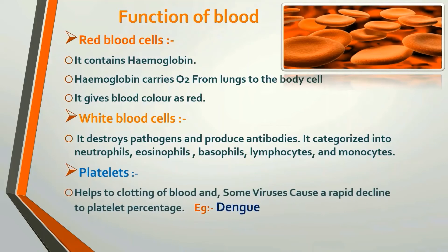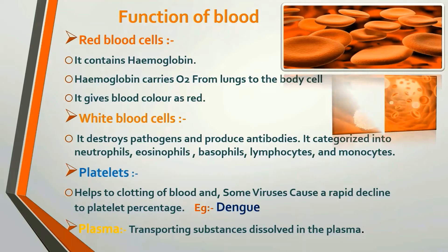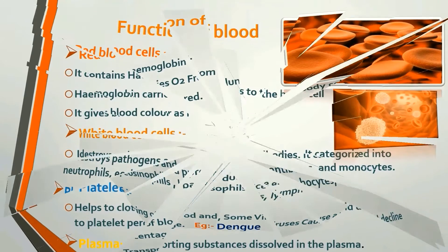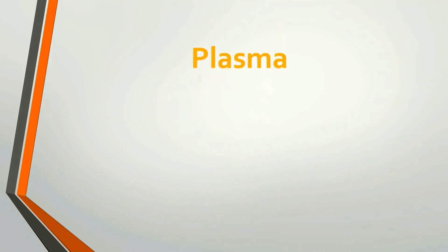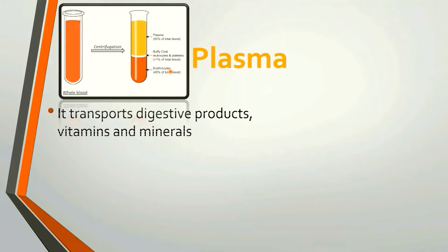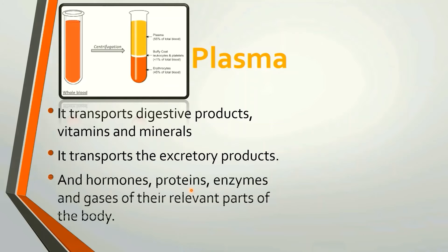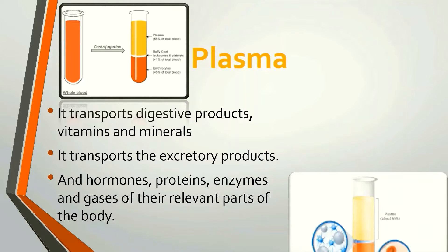Platelets help with the clotting of blood, and some viruses cause a rapid decline in platelet percentage. Then about plasma: it transports substances dissolved in it. A blood sample spun with a centrifuge can separate corpuscles and plasma. Plasma transports digestive products, vitamins, and minerals. It also transports excreted products, and hormones, proteins, enzymes, and gases to their relevant parts of the body.